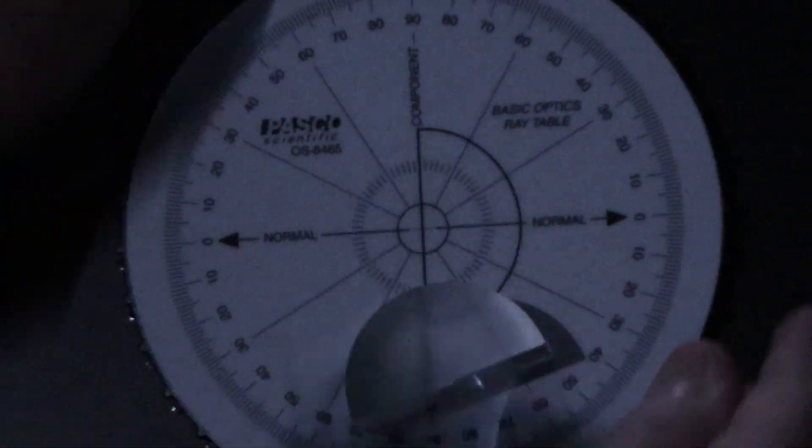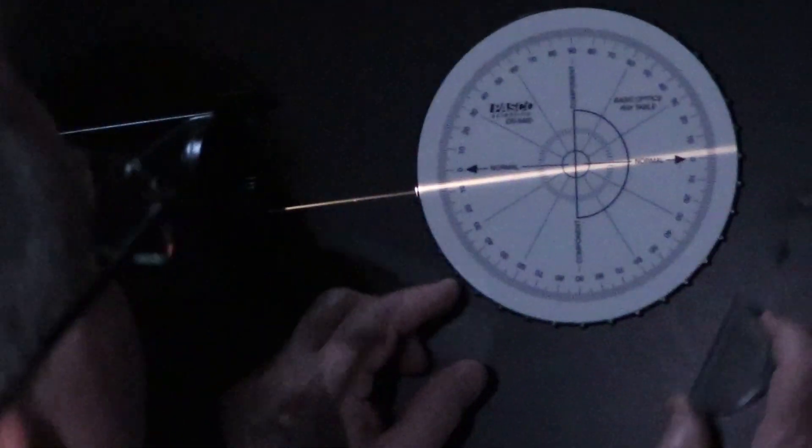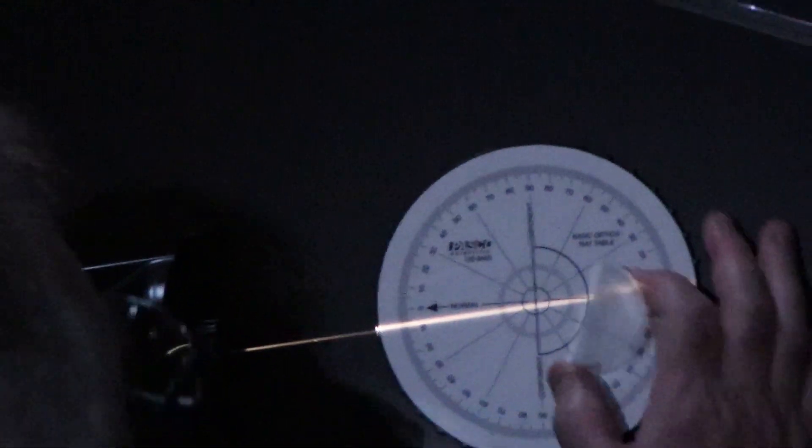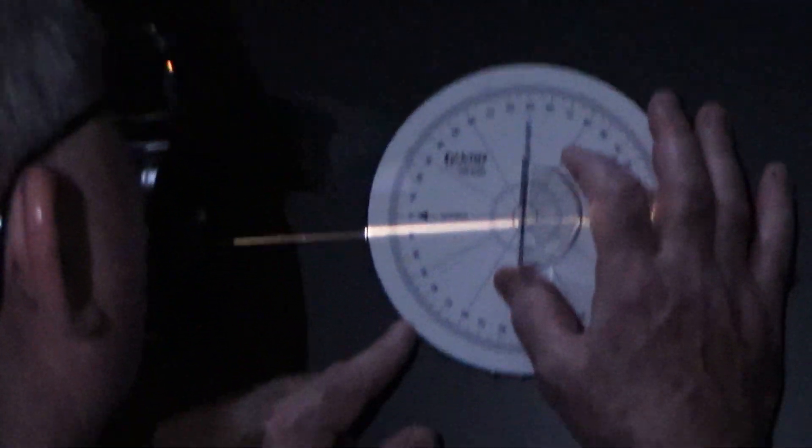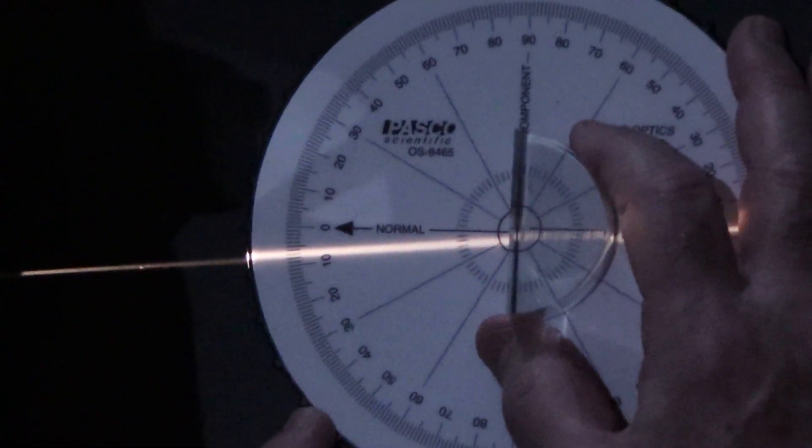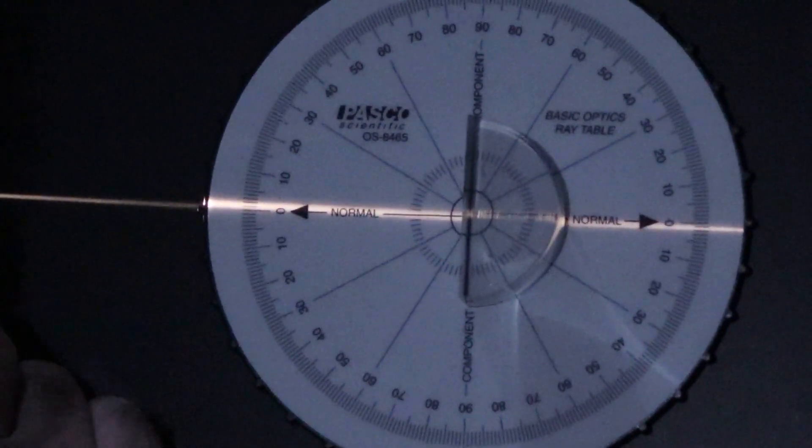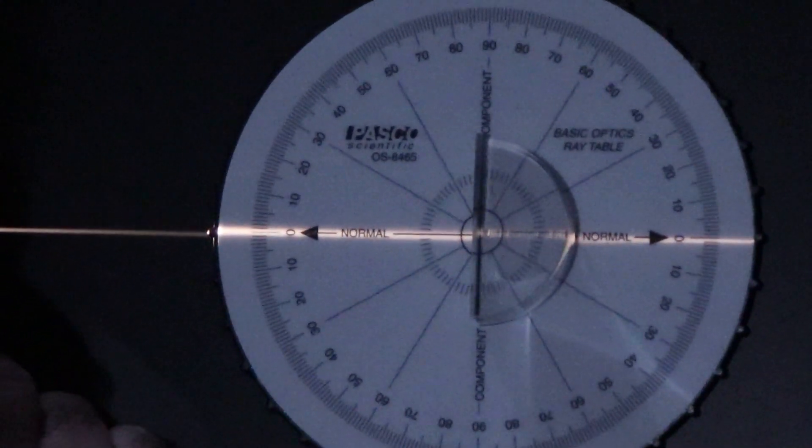So what we're going to do, it's very similar to the previous lab. We're going to put the optics table in front of the light source. Turn on the light. And the flat surface goes right on the little footprint. You can see the footprint here on the optics table. So we're going to put that right on there.